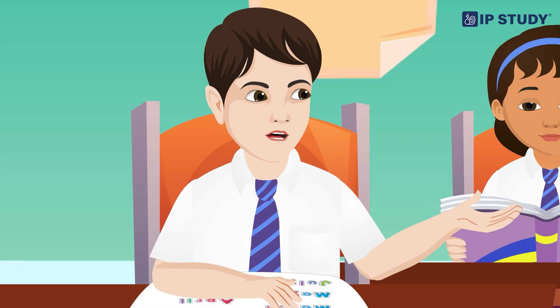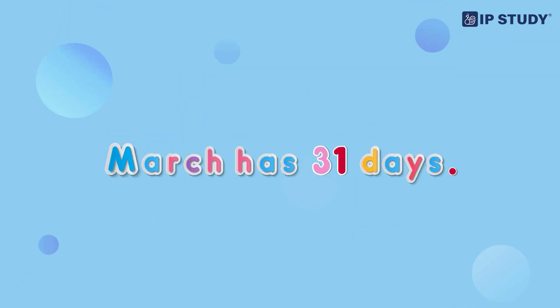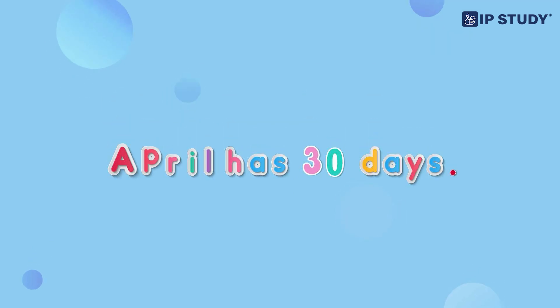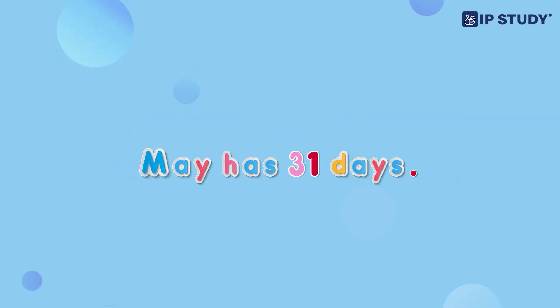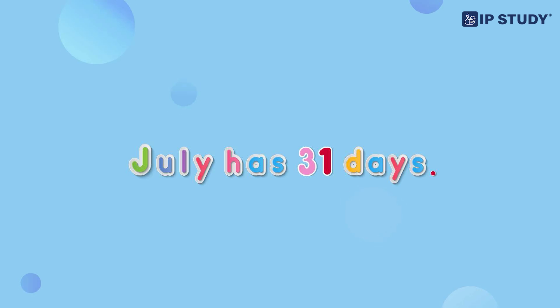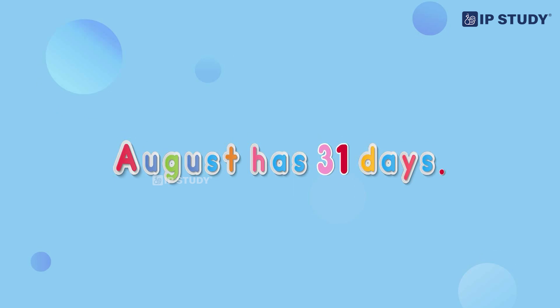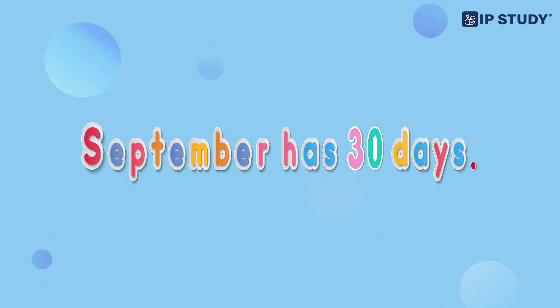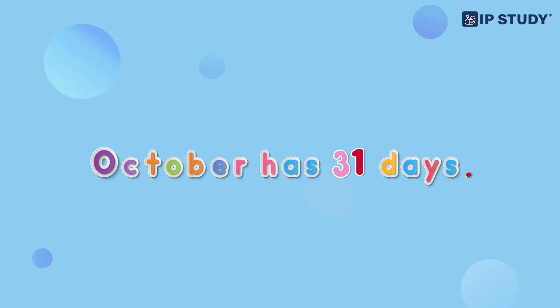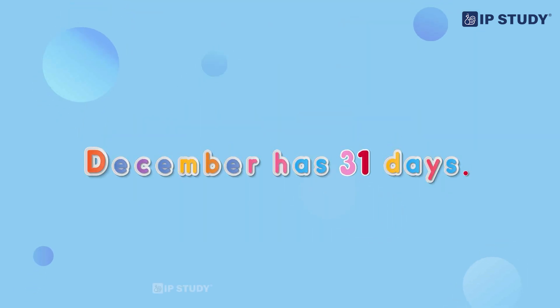January has 31 days. February has 28 days, and in a leap year, 29 days. March has 31 days. April has 30 days. May has 31 days. June has 30 days. July has 31 days. August has 31 days. September has 30 days. October has 31 days. November has 30 days. December has 31 days.